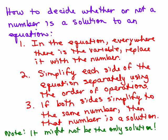Okay, here are the steps. First, in the equation, everywhere there is the variable, replace it with the number that you're given. Second, you're going to simplify each side of the equation separately using the order of operations. Third, if both sides simplify to the same number, then that number is a solution because then you'd have both sides equal.